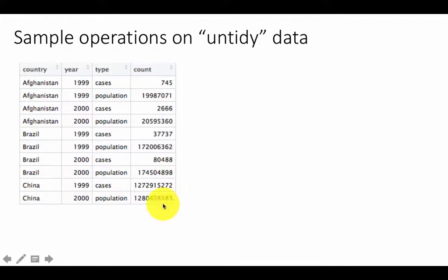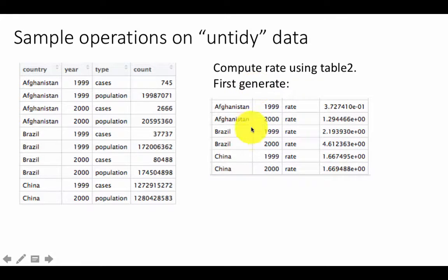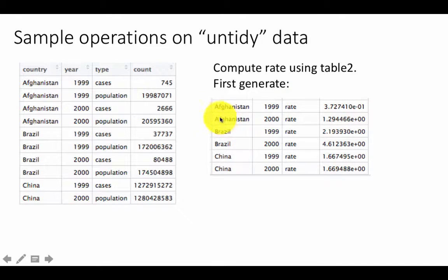So let us try to do the same computation that we did earlier, namely compute the rate using this table, which is Table 2. In order to do that, we would somehow first have to generate the computation of the rate for each country for each year. So Afghanistan 1999, the rate would be 745 divided by the population value, which will turn out to be the rate. And Afghanistan 2000, etc. We would have to somehow compute this.